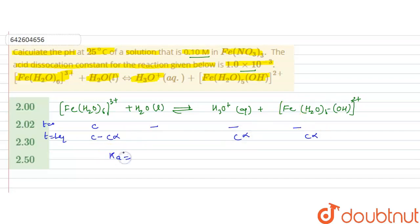So, we can write the dissociation constant that is Ka, so it will be concentration of the products that is C alpha into C alpha, these are the products, so it will be C alpha into C alpha divided by concentration of reactant that is C minus C alpha. So, we can write it as C into 1 minus alpha, so this C is cancelled, so it will be C alpha square upon 1 minus alpha.